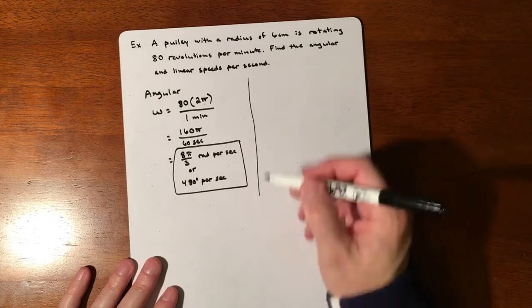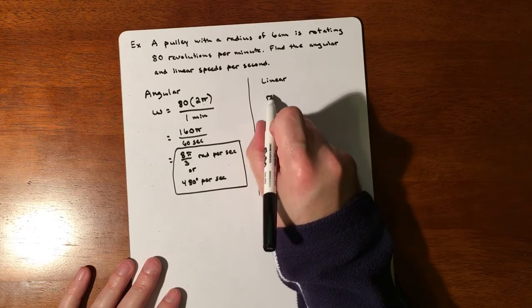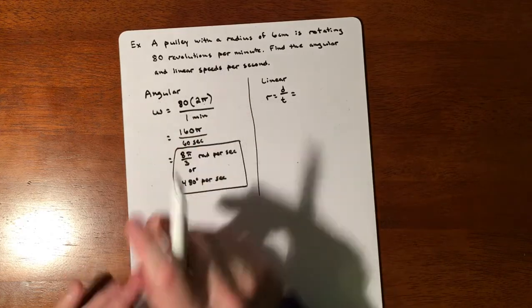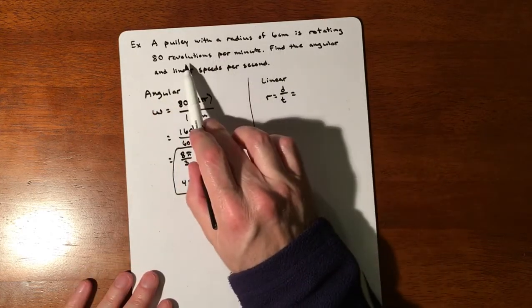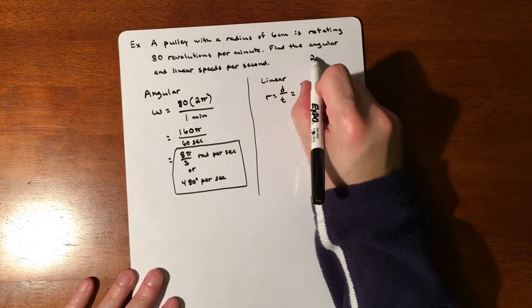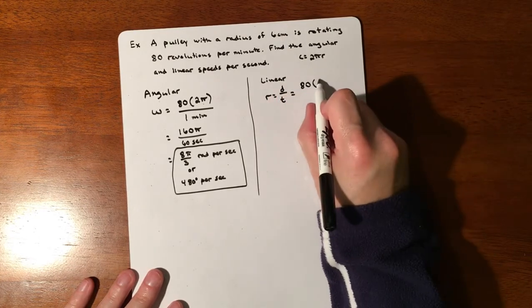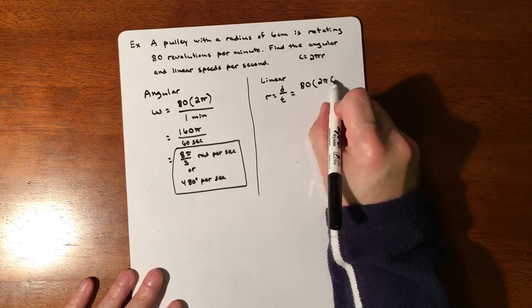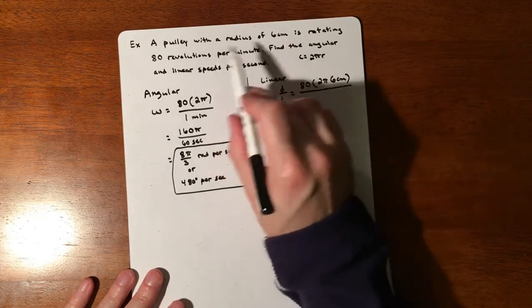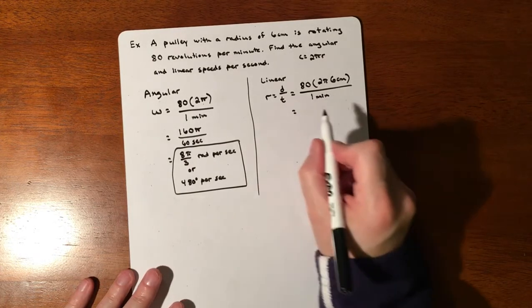Your linear speed is your rate - distance divided by time. We have 80 revolutions, so we have 80 circumferences. For our circumference being 2πr, we have a radius of 6 centimeters, so 2π times 6 centimeters, we have 80 of them, divided by a per minute measurement, so we'll make that 60 seconds.